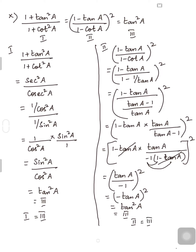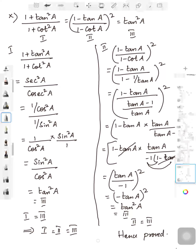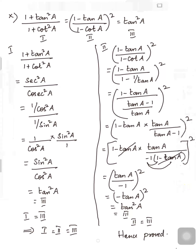So we have proved the second part is also equal to the third part. Since part 1 = part 3 and part 2 = part 3, all three are equal. We have proved (1 + tan²A)/(1 + cot²A) = ((1 - tanA)/(1 - cotA))² = tan²A. Hope it is clear, children. Thank you.